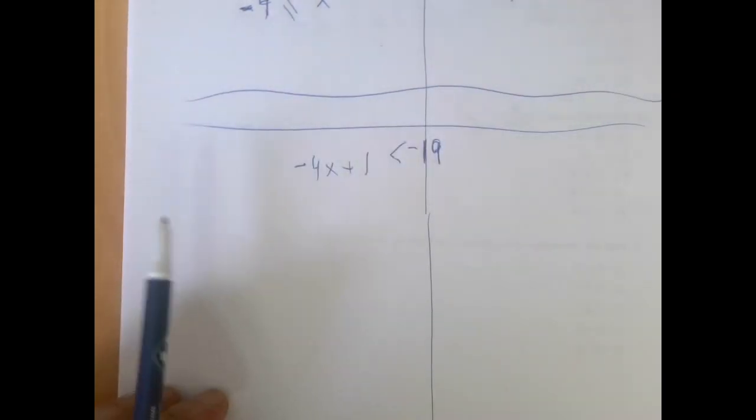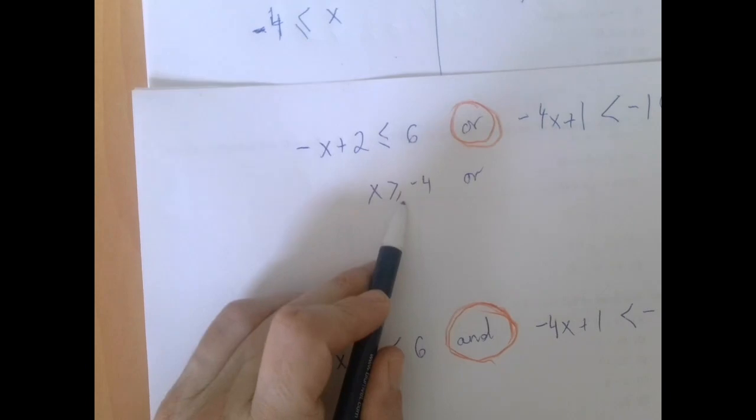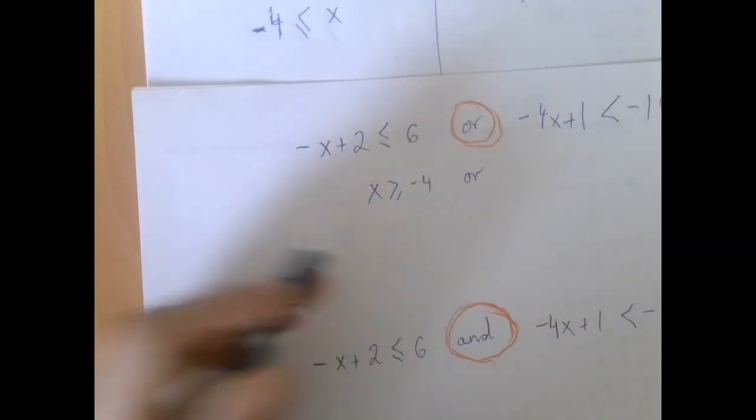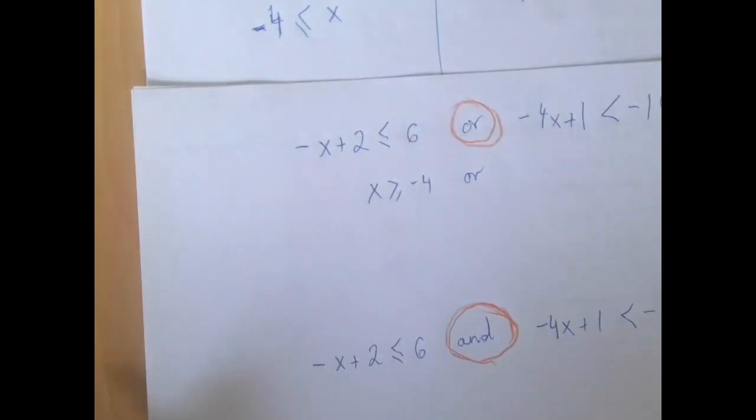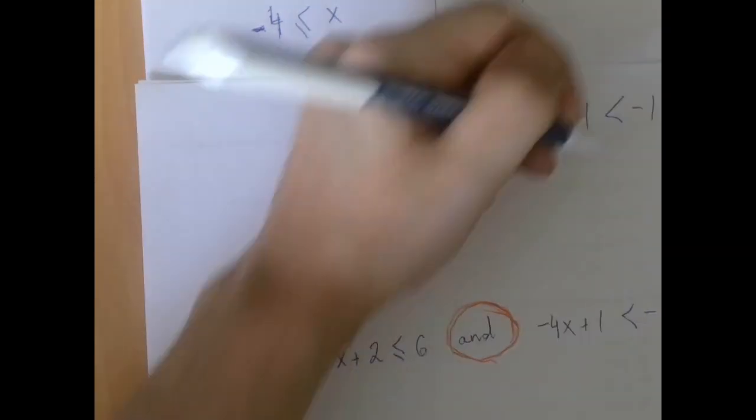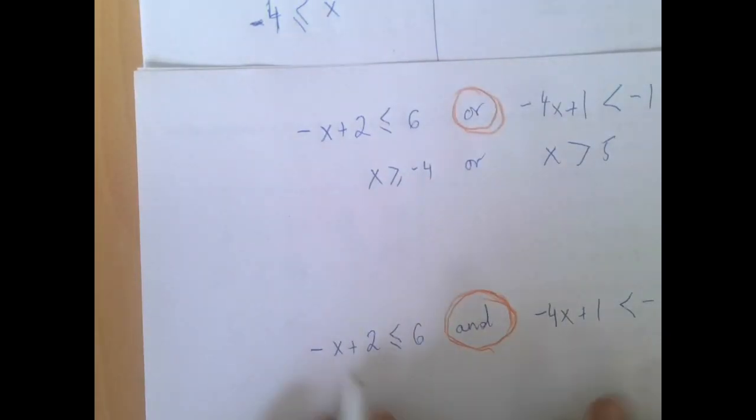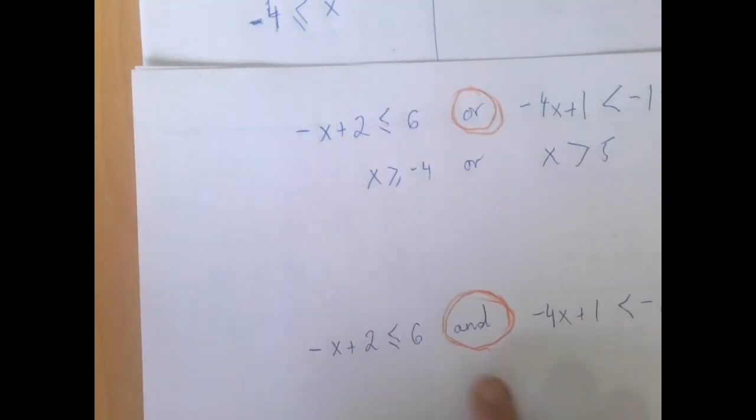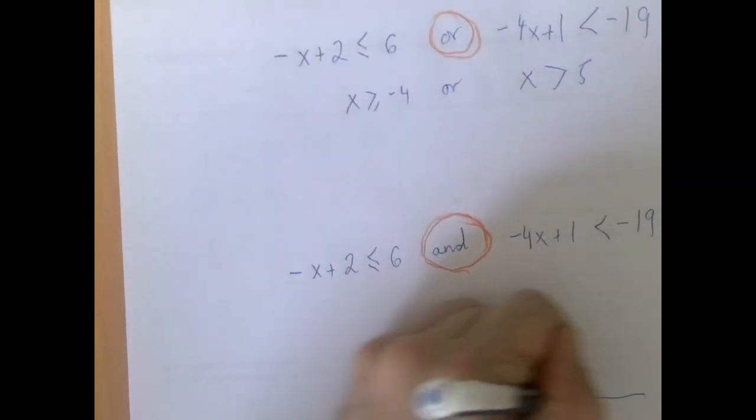But there's always a way out. Going back, the first inequality translated into X is greater than or equal to negative 4. And the second one that X is greater than 5. And this is identical, only the word AND between them. So let's just draw a picture of these two sets.